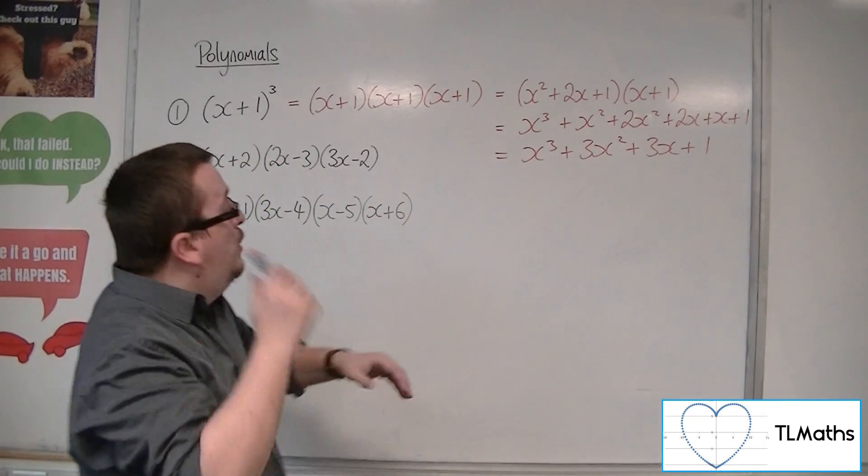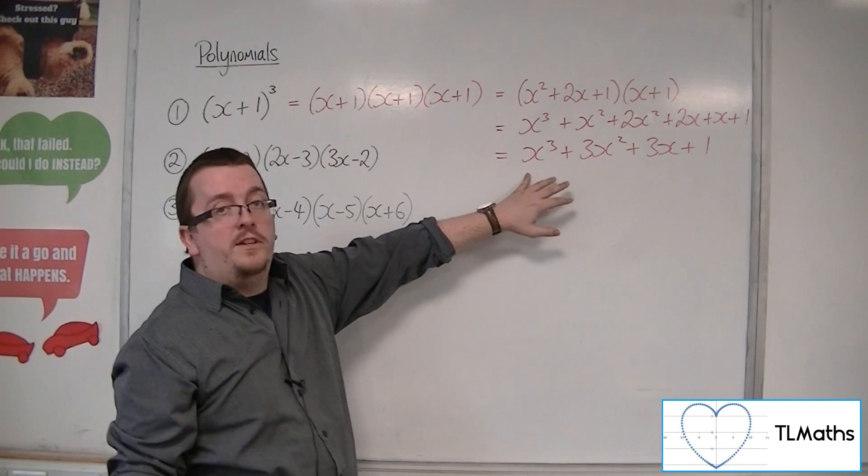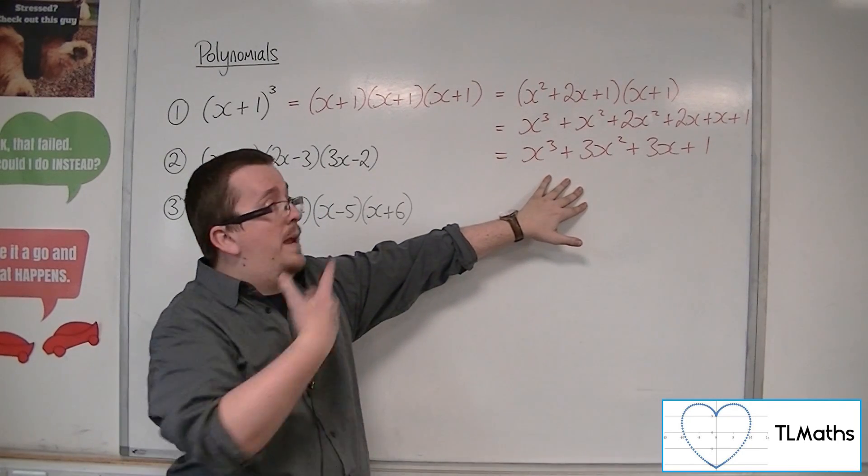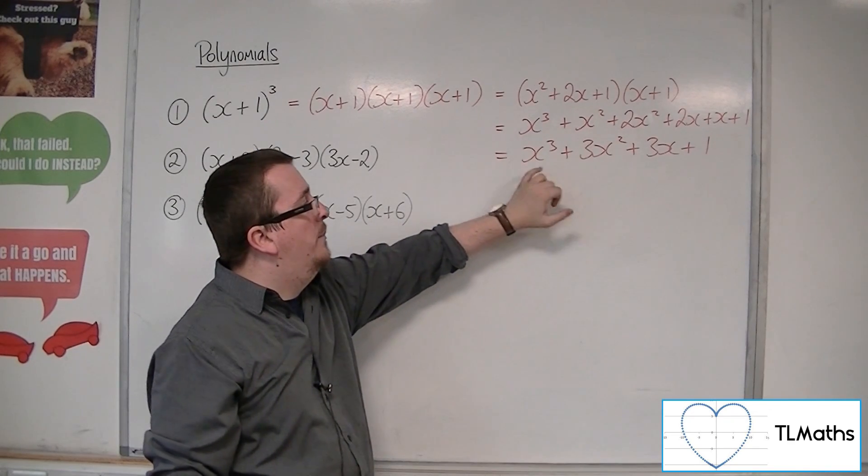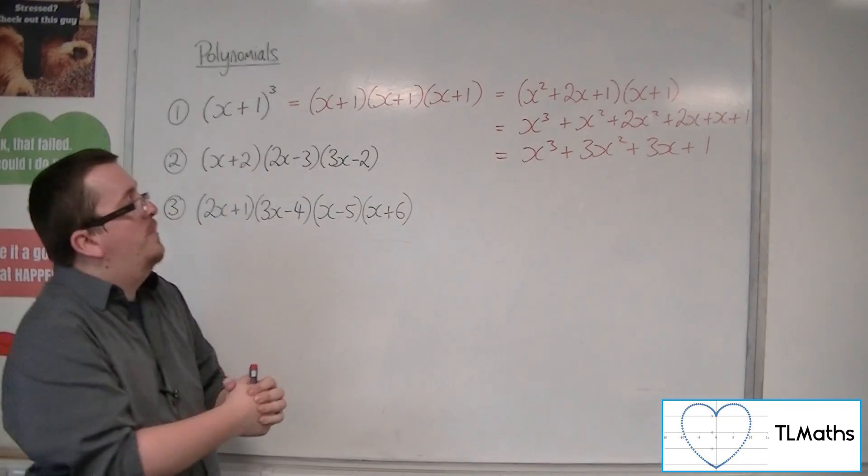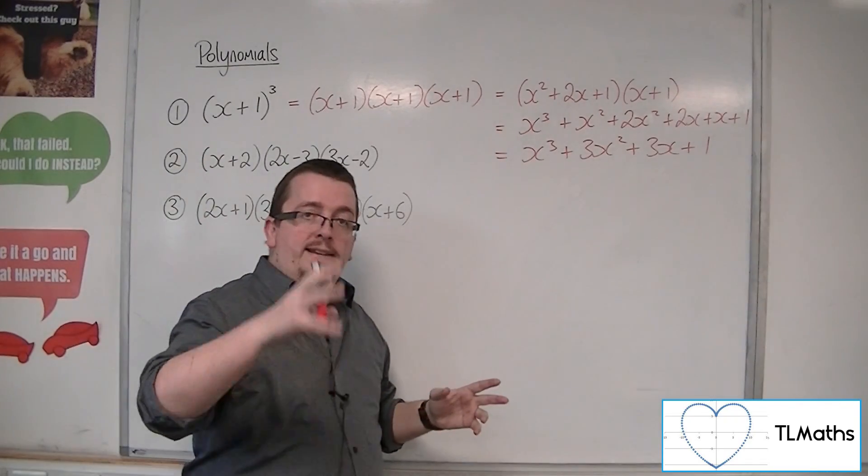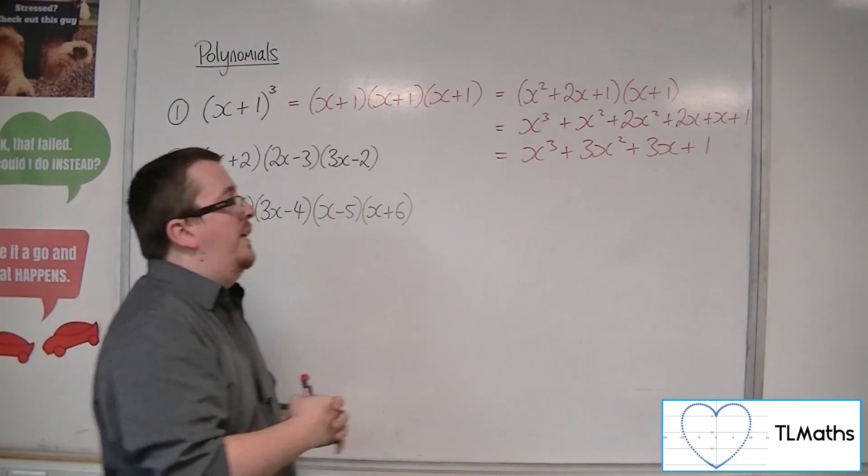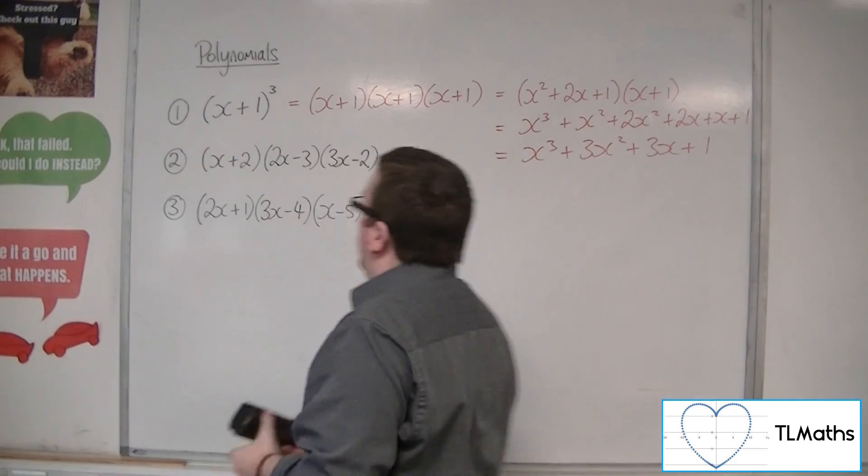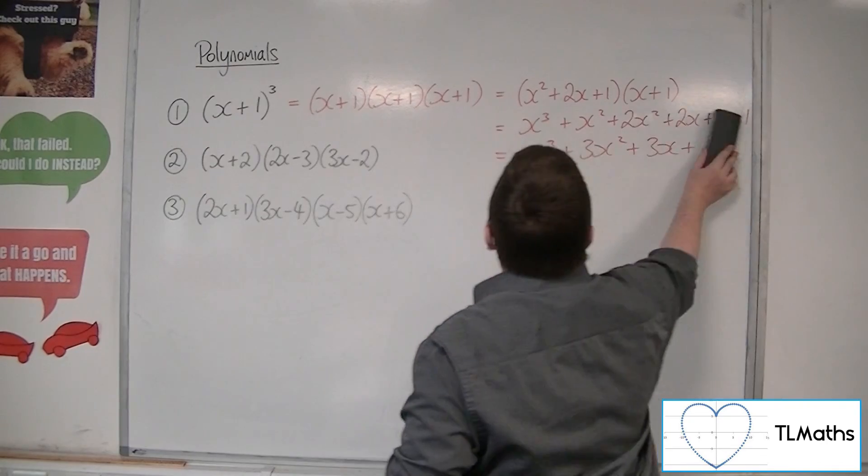Now, if you've looked at binomial expansion by this point, then you should be able to recognize where those numbers, the coefficients, have come from. If you haven't looked at binomial expansion yet, you might want to look into how these two things connect. So that's the first one. Let's have a look at the second.